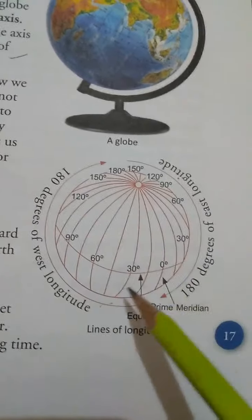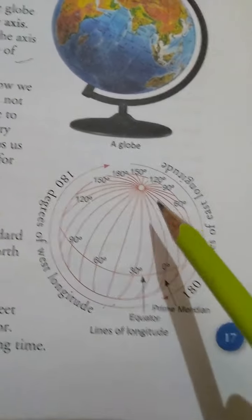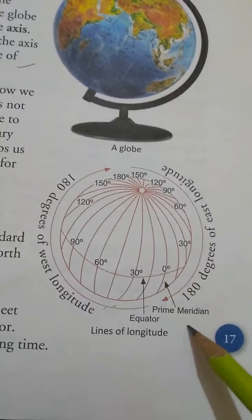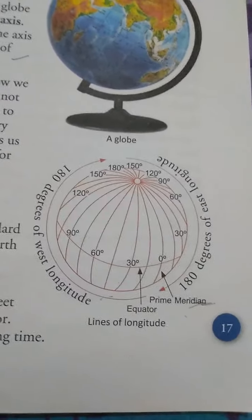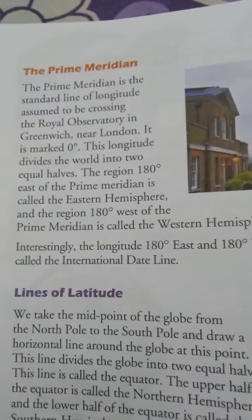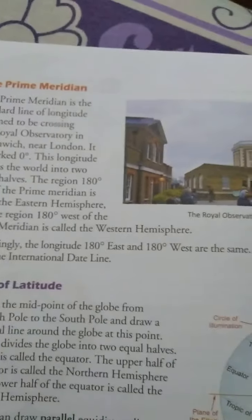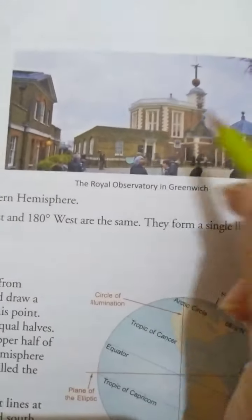On page number 17, we can see in this image the vertical lines which form the longitudes, the horizontal line is the equator, and this line is the Prime Meridian. The Prime Meridian is the longitudinal line passing through the Royal Observatory, which is a place in Greenwich near London.